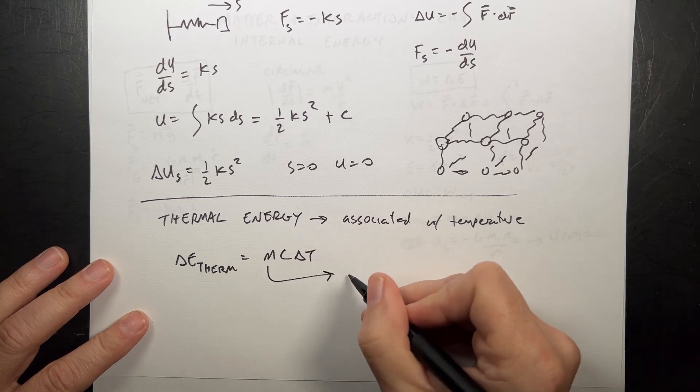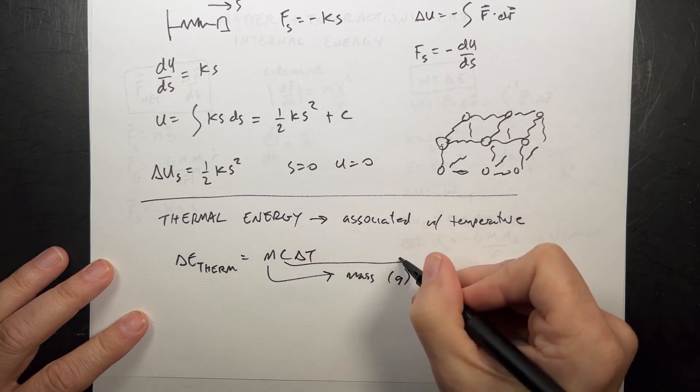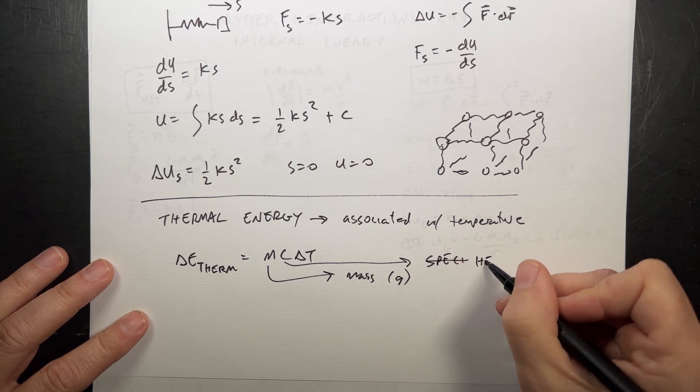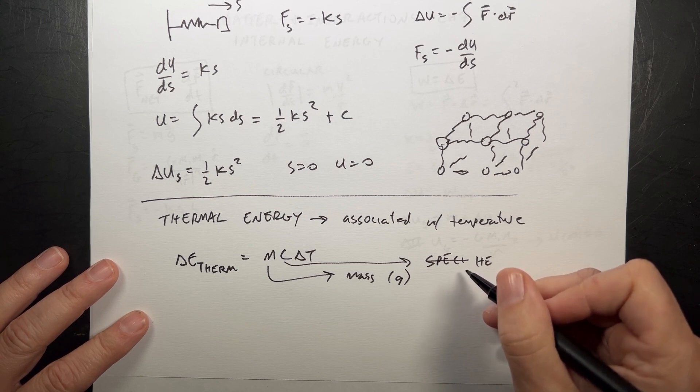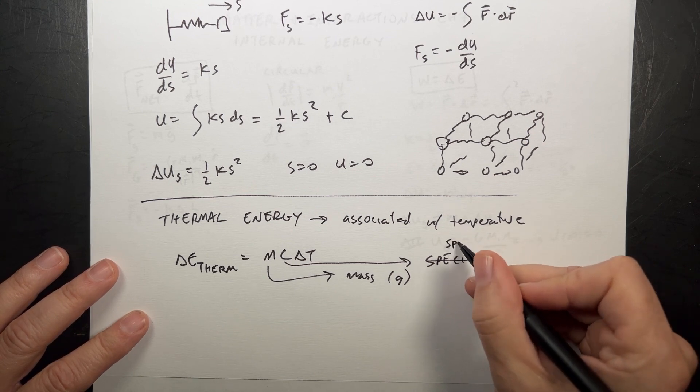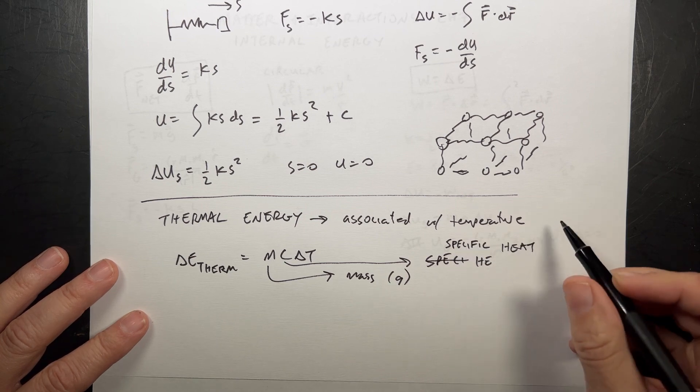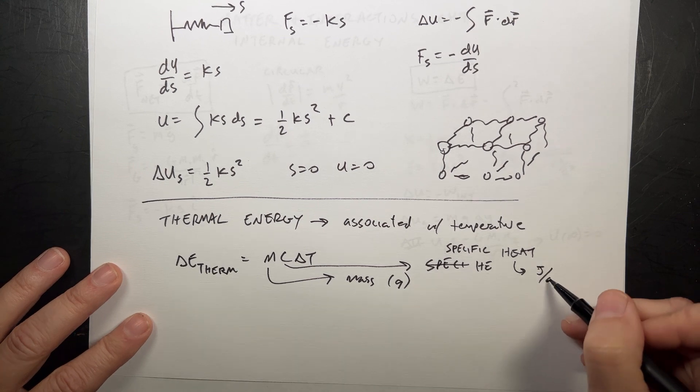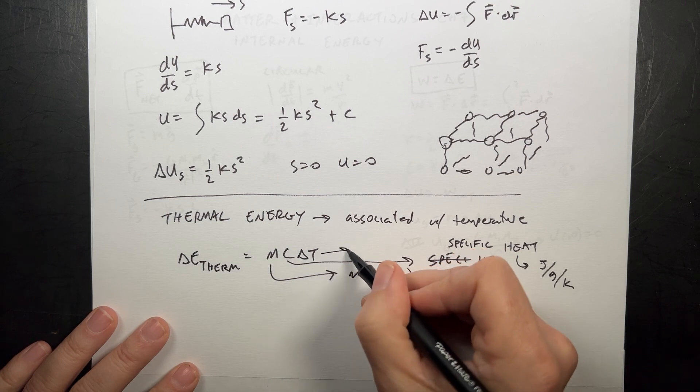Is MC delta T. This is the mass in grams. Usually we use grams. C is the specific heat capacity. I get that always mixed up. It's basically a value of the energy, joules per gram per Kelvin. We use Kelvin for temperature and this is the temperature change.